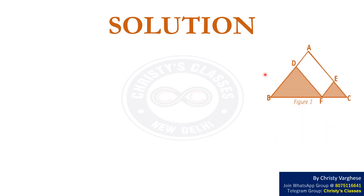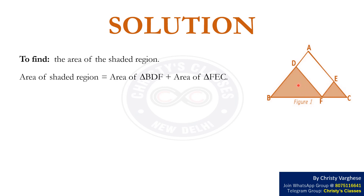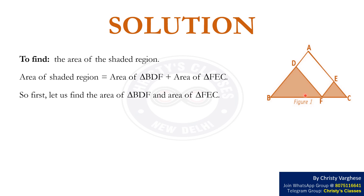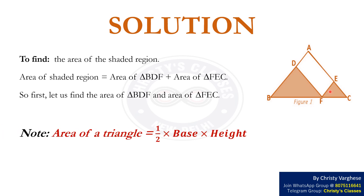Solution. We are required to find the area of the shaded region. Area of the shaded region equals area of triangle BDF plus area of triangle FEC. Note that the area of a triangle equals half its base into height.